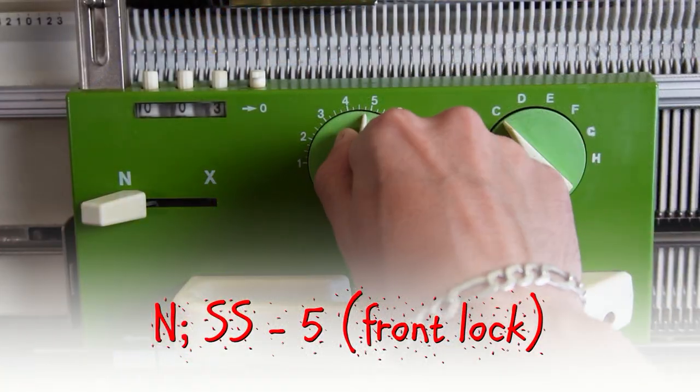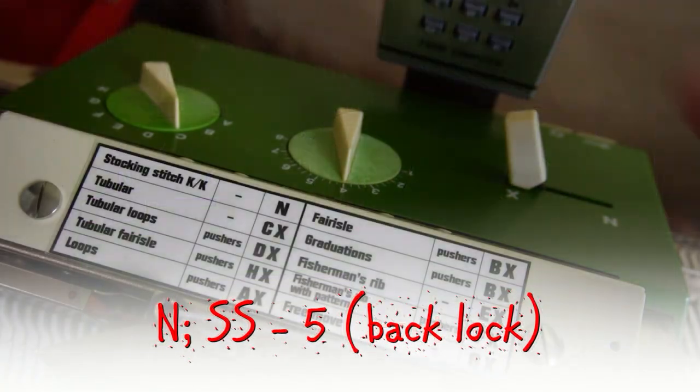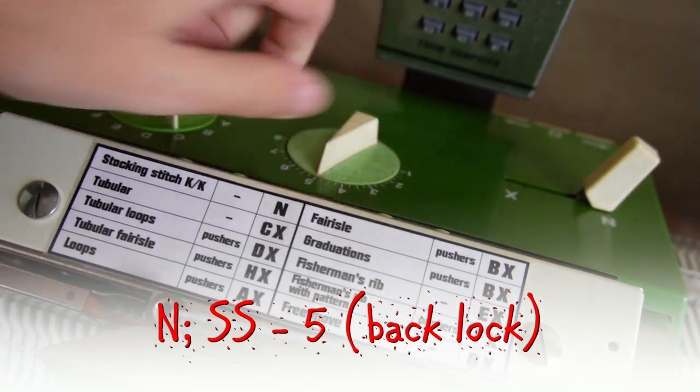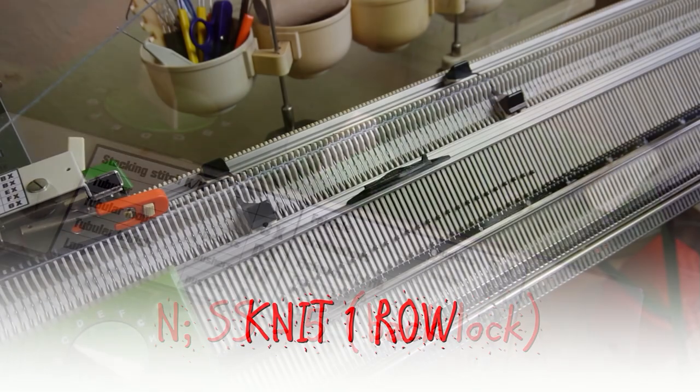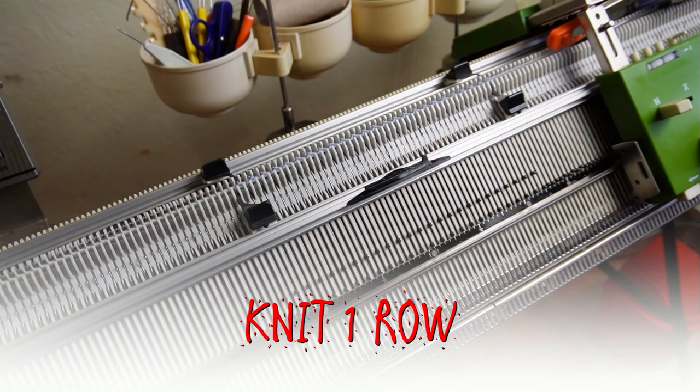Set both locks to N and increase the stitch size to 5. Knit one row to finish the cast on.